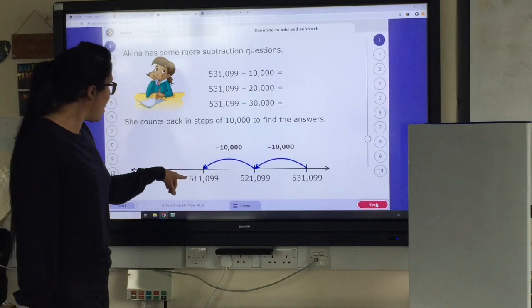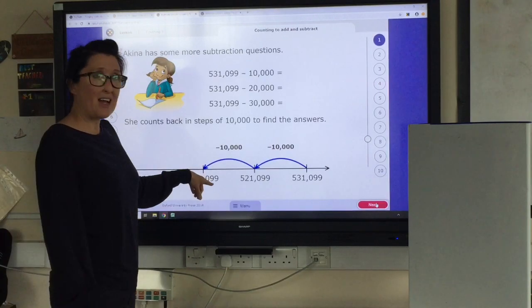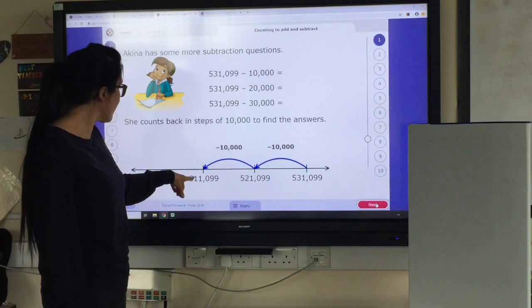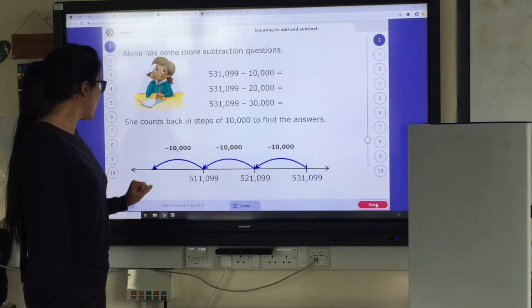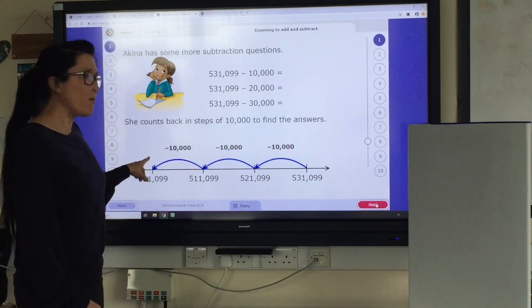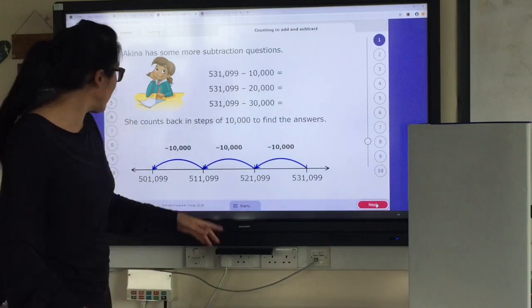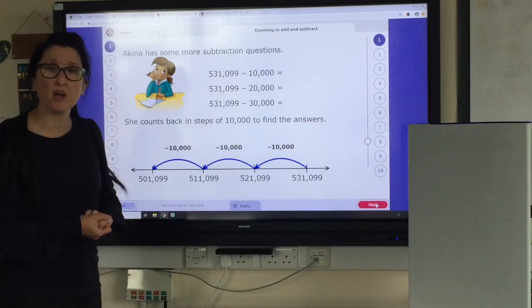So we've got, we'll just stop there for a sec. 511,099. So I'm taking off another ten thousands. So that one's going to become a zero. Now I would hope, because I know we've done this in class, that you could go on and take another ten thousands off that.